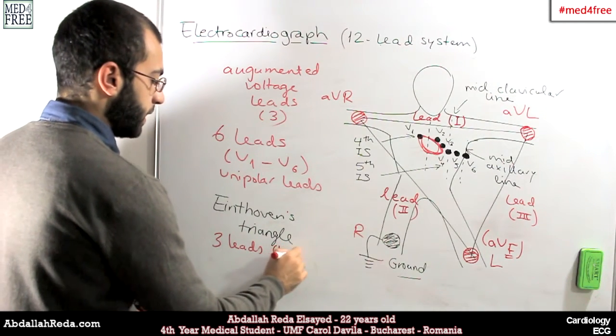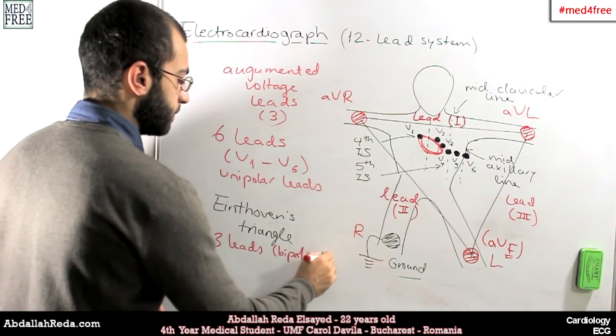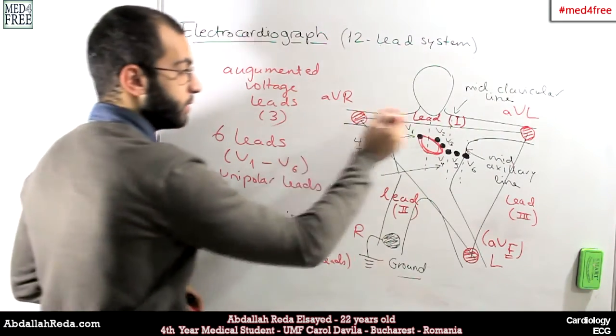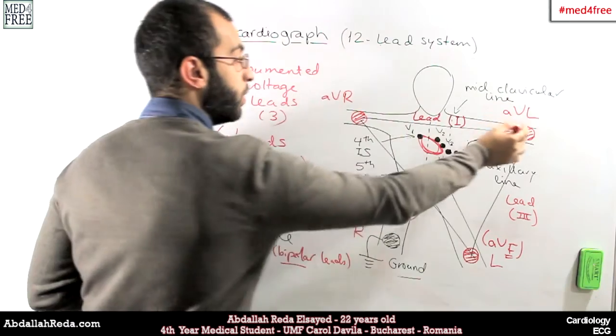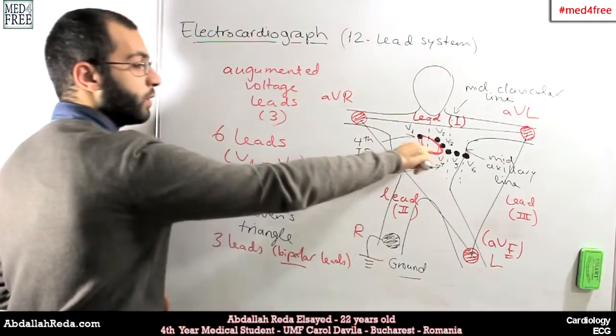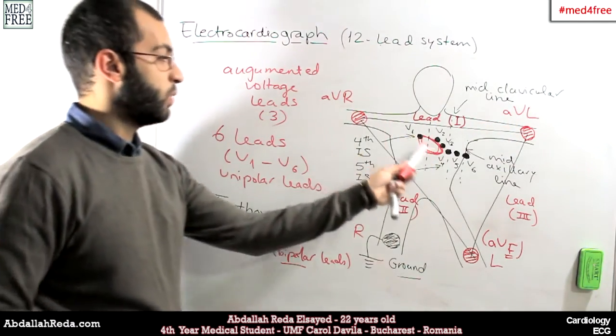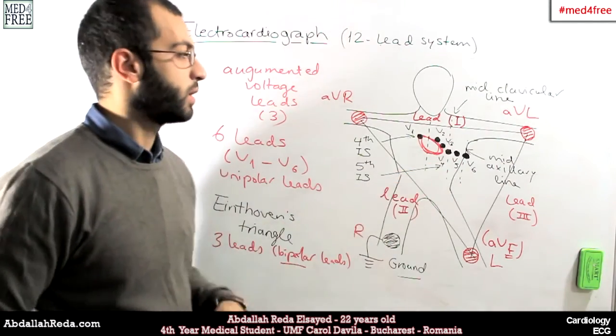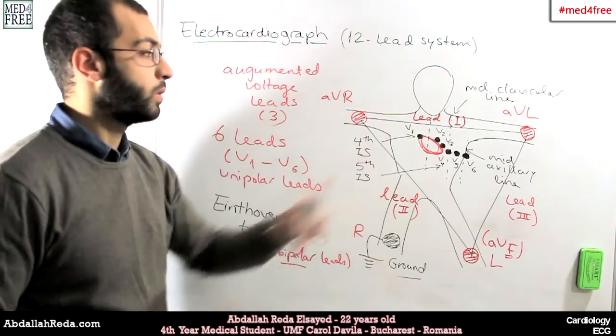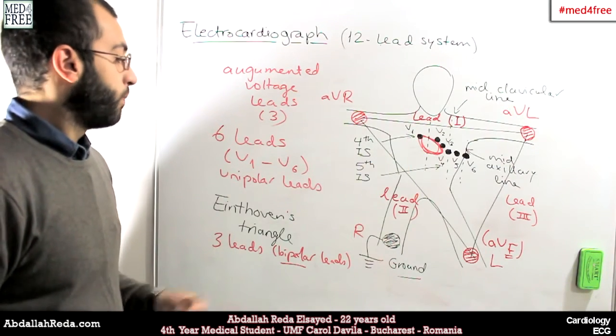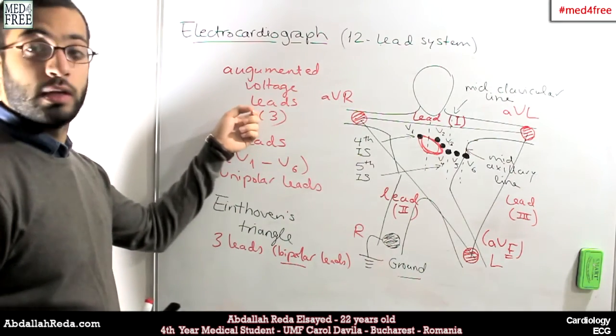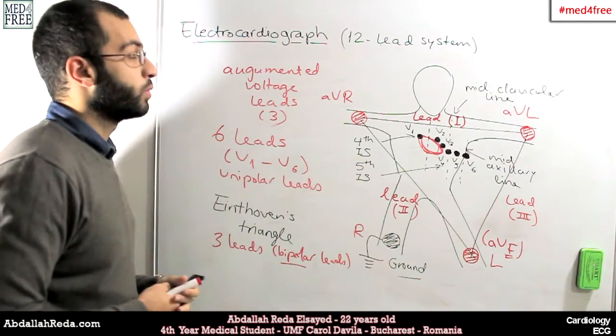And those ones are called bipolar leads. Now you see the difference. Bipolar, because each one of them has two poles, while for the V1 to V6 leads, they're called unipolar leads because each one of them has only one pole. So now, 3 plus 6, 9 plus 3, 12. Now we completed the 12-lead system.